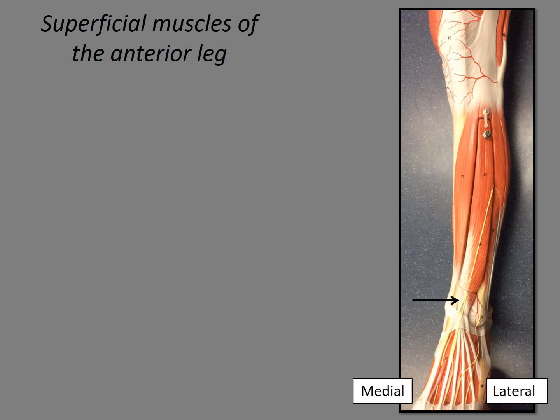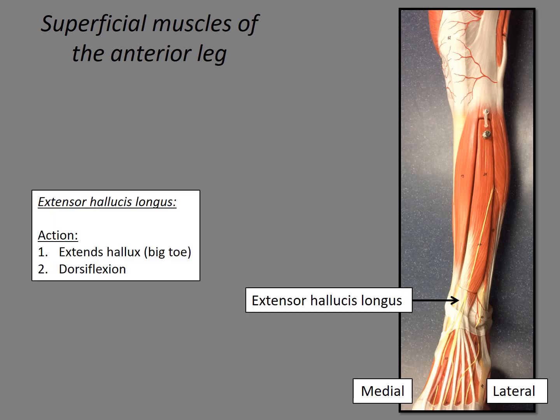The final muscle using this image is shown by the arrow. If we follow the tendon down, it goes out to the hallux, or phalanx one. From this view, this muscle is going to be an extensor because it's on the anterior portion of the leg. This is the extensor hallucis longus. The action is to extend the hallux, or big toe, and also to dorsiflex the foot.